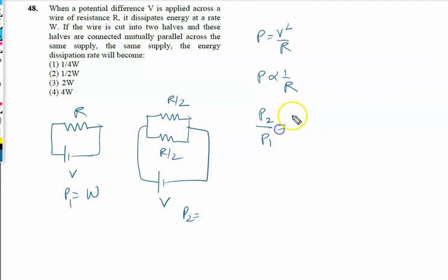P2 by P1 is given by R1 by R2. So P2, where P1 equals W and R1 equals R, depends on the new resistance when R/2 and R/2 are in parallel.